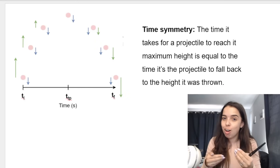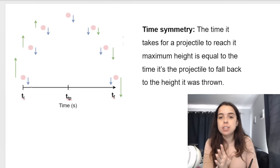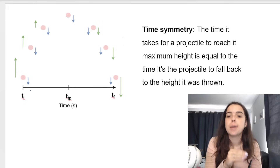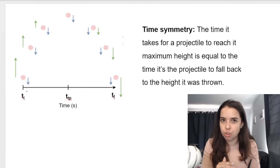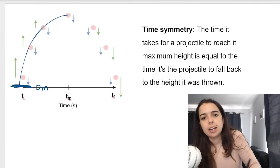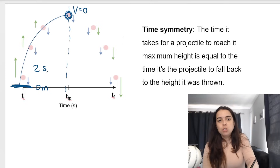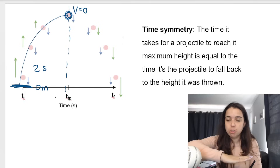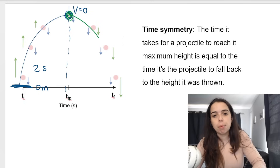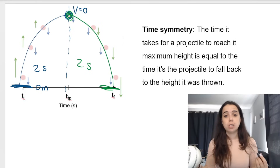Other things to be aware of when doing vertical projectile motion questions is something called time symmetry. The time it takes for a projectile to reach its maximum height is equal to the time it takes the projectile to fall back down to the height from which it was thrown. So if a ball is released from the ground and it takes 2 seconds to reach its maximum height, it will take the exact same 2 seconds to come back down to the level at which it was thrown. That's why it's called time symmetry — 2 seconds up, 2 seconds down.